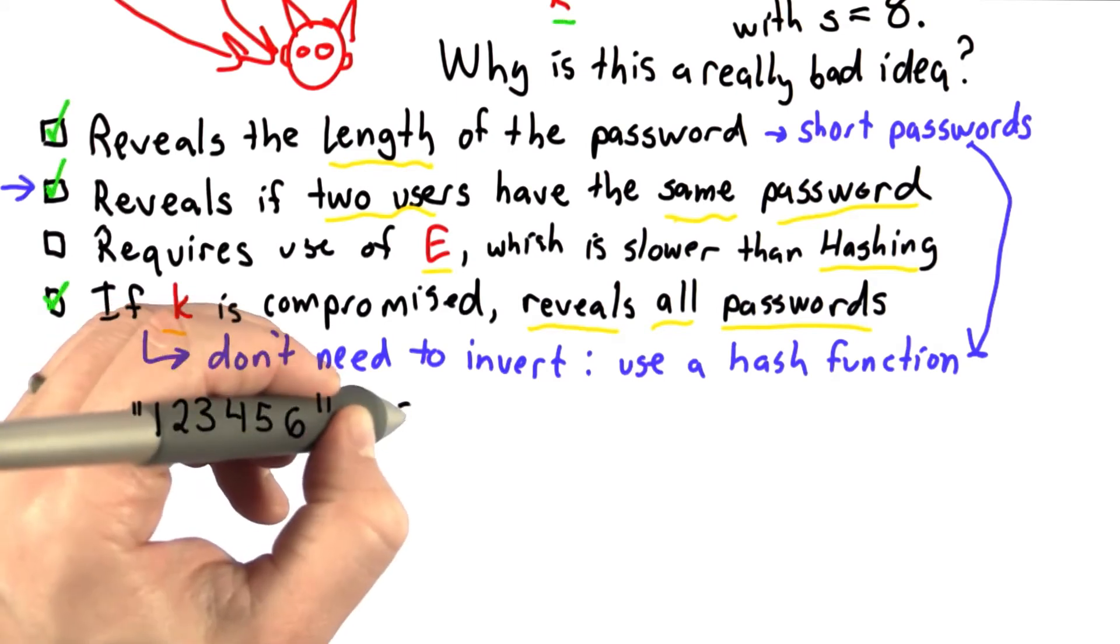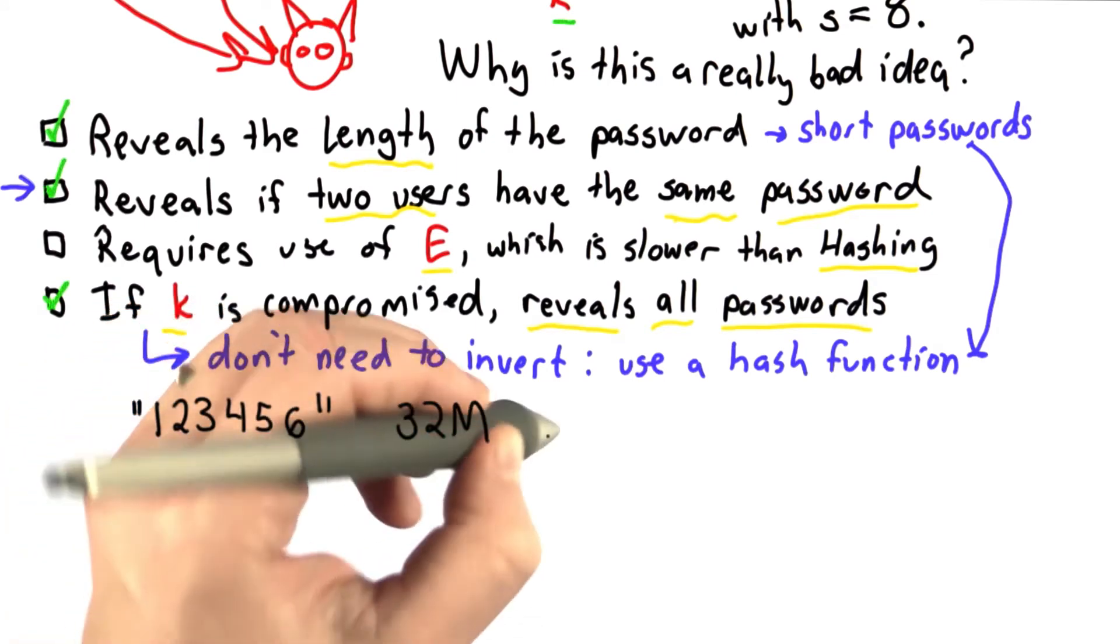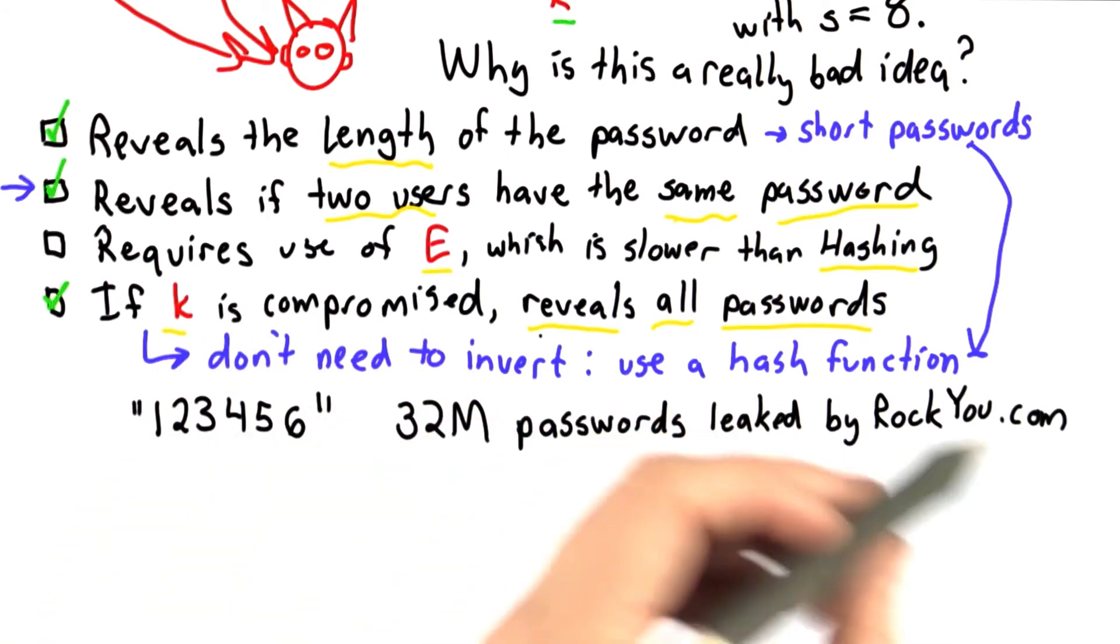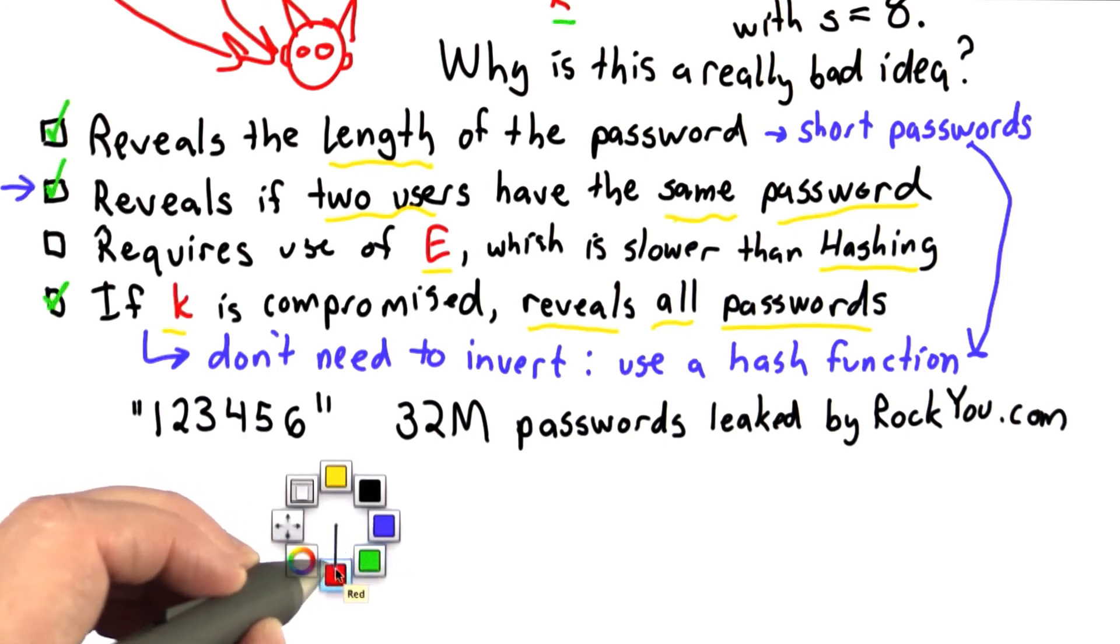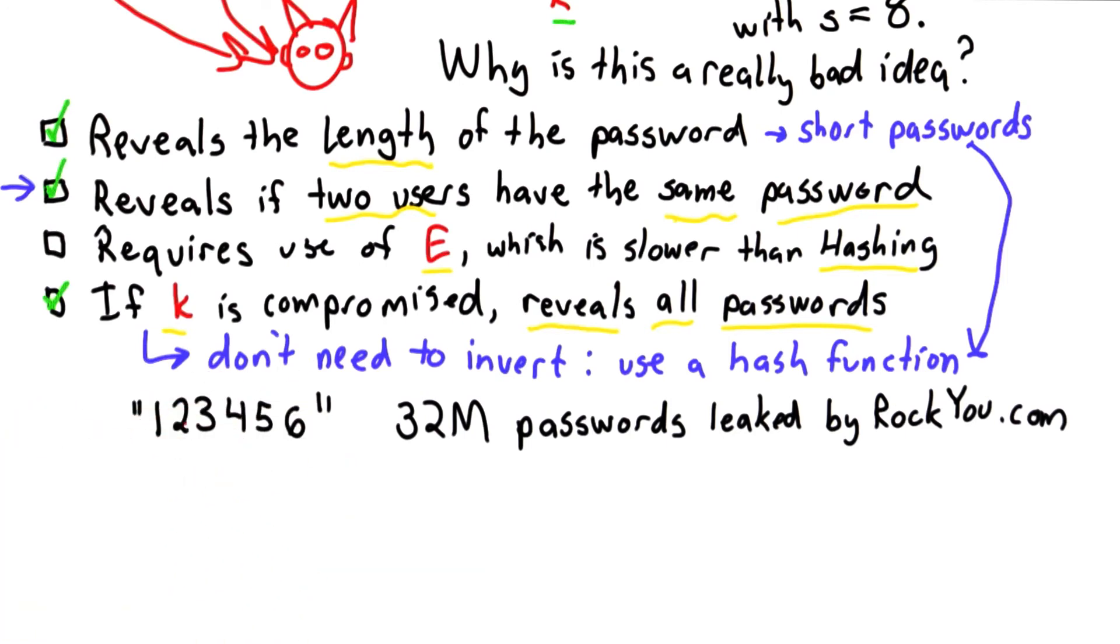Out of the 32 million passwords that were leaked, an analysis of the 32 million passwords that were leaked by RockYou.com - and they did not store passwords in an encrypted format, so all the actual passwords were easily revealed - the most popular password was 123456.